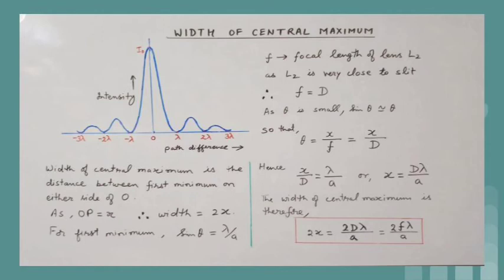Hence, alternate dark and bright fringes are followed. The intensity of the second secondary maximum is found to be I₀ by 61.